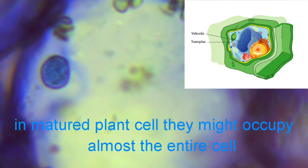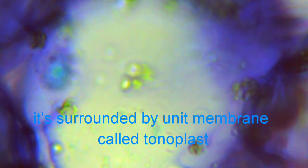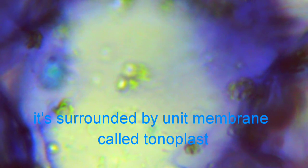In mature plant cells, they might occupy almost the entire cell. It's surrounded by a unit membrane called tonoplast.